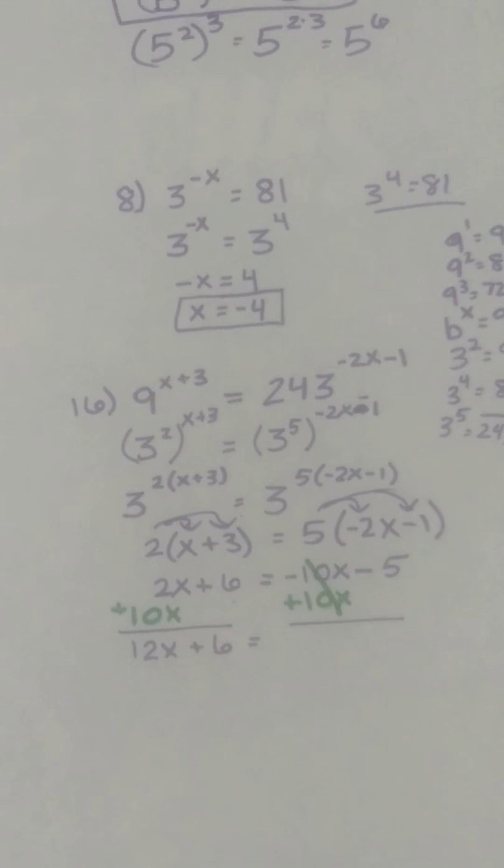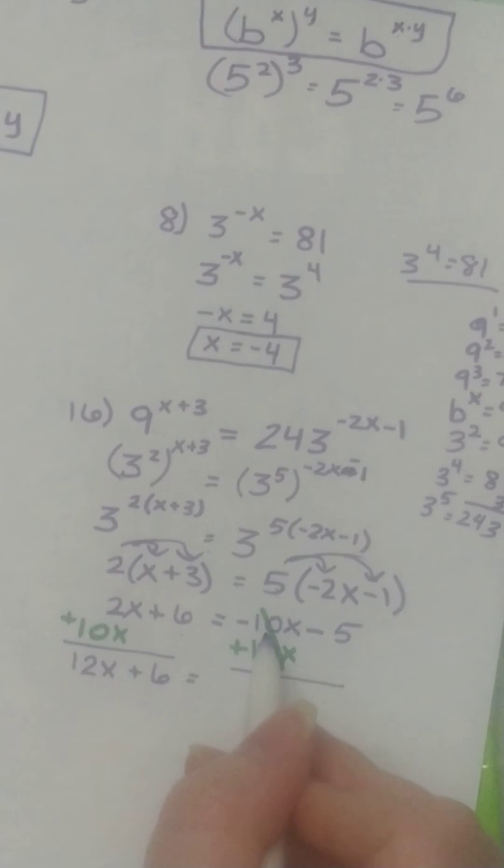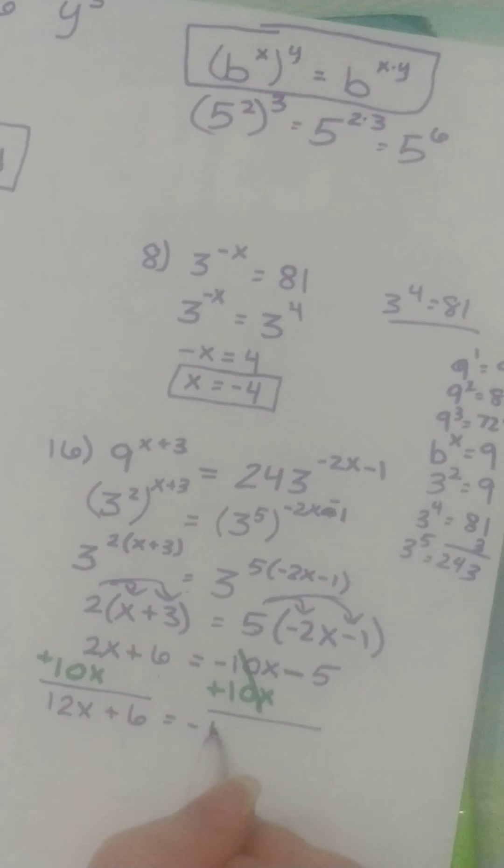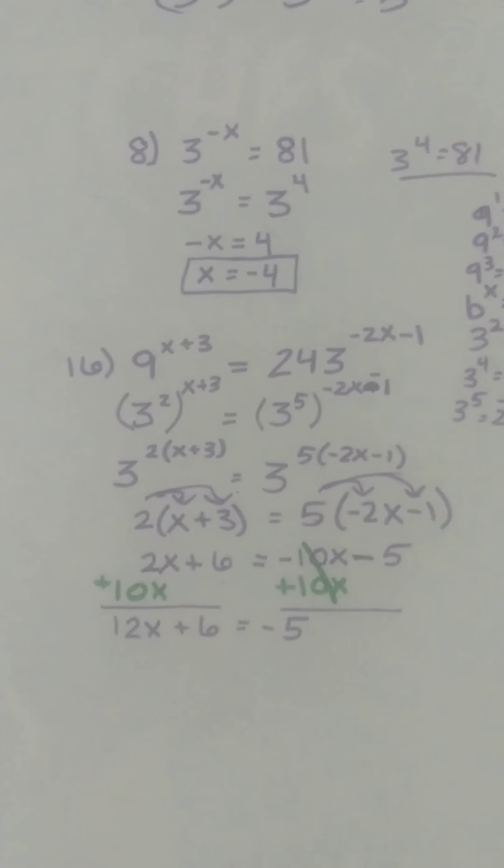This got cancelled, but remember the 10x got cancelled. The negative 10x got cancelled. This minus did not get cancelled. So this is still negative 5. Now we've got 12x plus 6 equals negative 5.